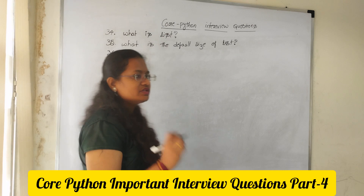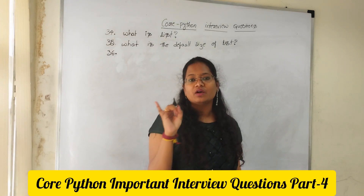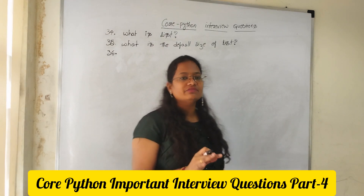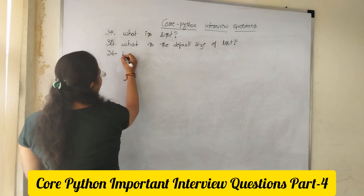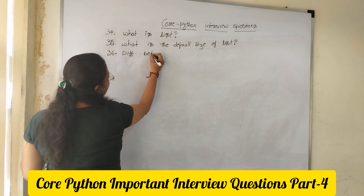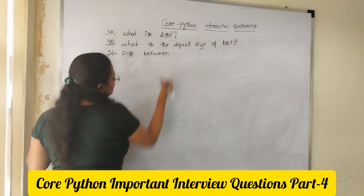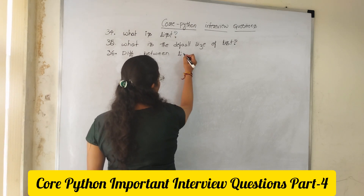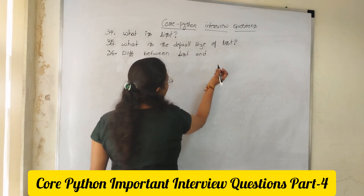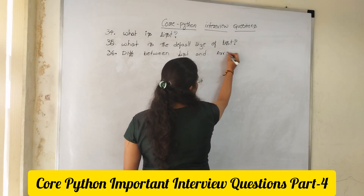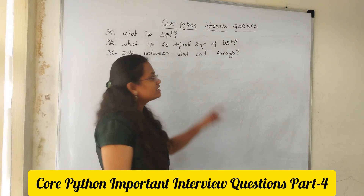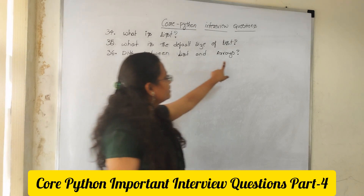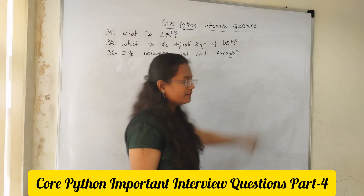Question 36: We have already discussed slicing, replication, and concatenation — everything will be done again in the list concept and the tuple concept as well. Difference between list and arrays: you need to differentiate between them. A list is a heterogeneous collection of data, whereas an array is a homogeneous collection of data.